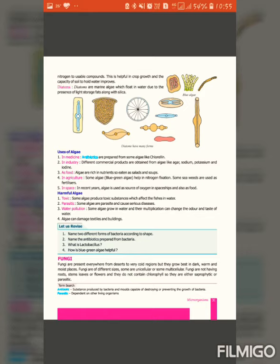Now let's talk about harmful effects of algae. The first one is toxicity. If some algae release toxic substances to water bodies, they can affect fish and cause mass killing. Second is parasitic: some algae which we consume can affect our body and cause serious disease. Third one is water pollution. And the last one is algae can damage textiles and buildings.